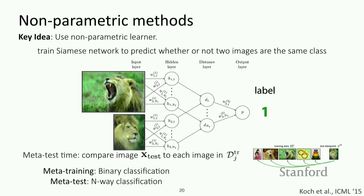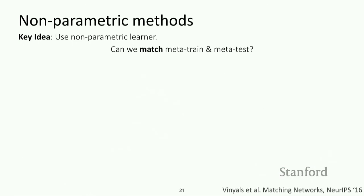One thing you might notice is that we're not actually training the Siamese network to do n-way classification — we're training it to do binary classification. Is there a way to match what happens during meta-training and meta-testing so we're training it to be good at n-way classification? This was the key idea introduced in the matching networks paper.